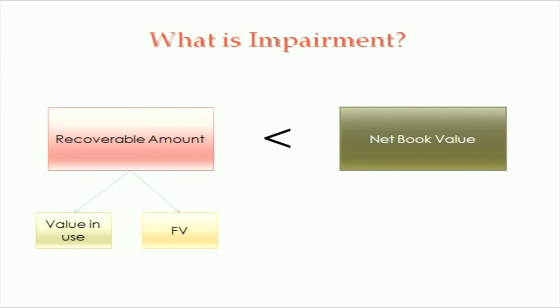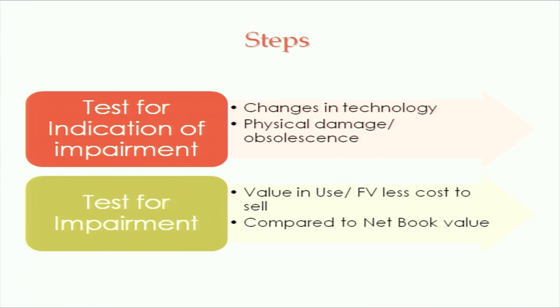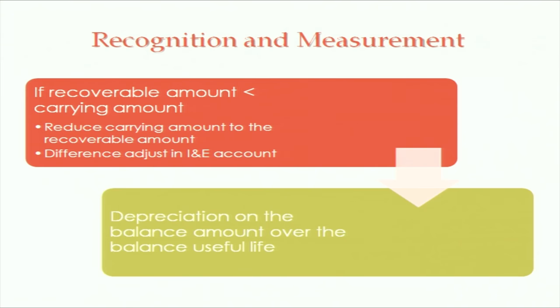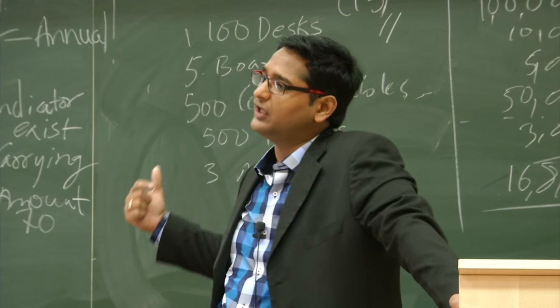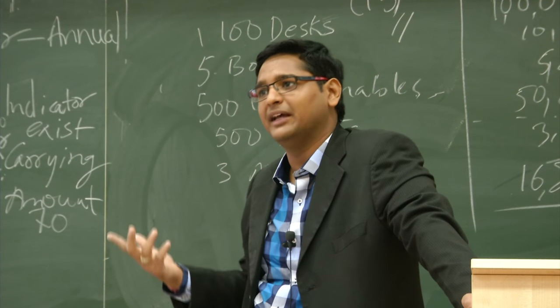If the desk can be repaired and brought back to the same level, there is no impairment — you have already charged 25,000 to P&L, so no further charge arises. To summarize: recoverable amount less than net book value means impairment. Recoverable amount is calculated as the higher of value in use or fair value less cost to sell. First you test for indication of impairment — physical damage, obsolescence, or technology change. Then you calculate value in use or fair value, compare with book value, and decide. If recoverable amount is less than carrying amount, there is impairment — reduce the carrying amount and charge the difference to the income and expenditure account. The balance carrying value is then depreciated over the remaining useful life of the asset.